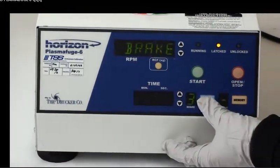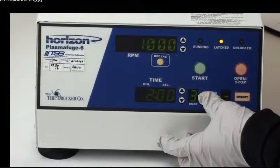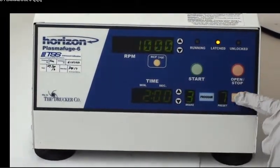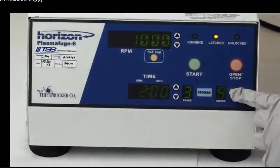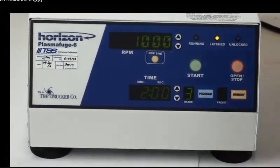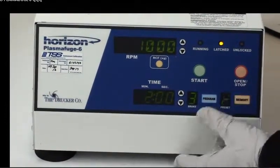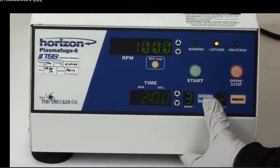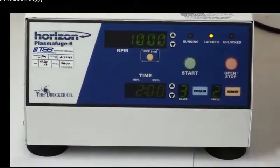I'm going to go back to program. I'm going to hold it down and choose the memory setting. You can actually save these settings in memory, so if you need to go back to that same setting you could automatically find it. Once I find the right memory I want to choose, which is two, I'm going to go back to program and hold it down. I'm just going to start it up again for you guys using that setting.